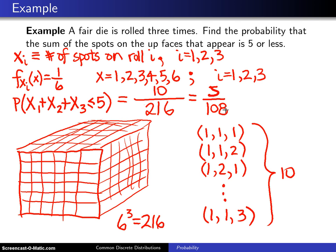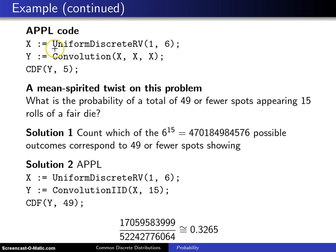Now on the next slide is how to calculate this in APPL. In APPL there is a built-in distribution that is known as the uniform discrete random variable, and when we send that from one to six, each roll of the die will have the distribution of X as it is defined here.